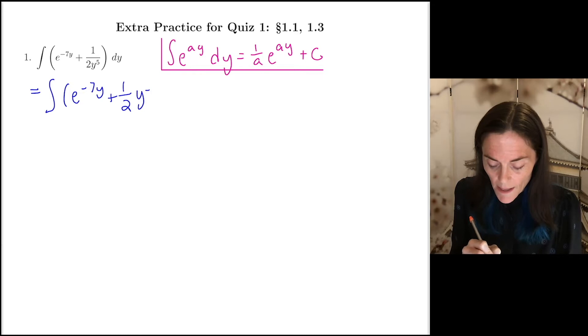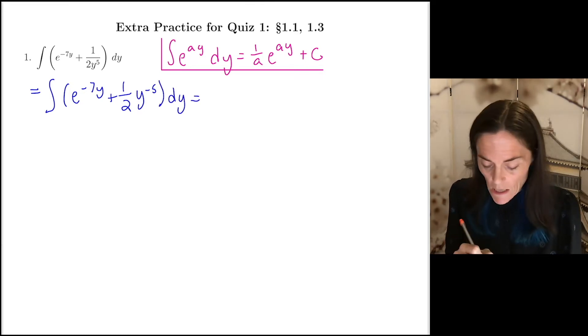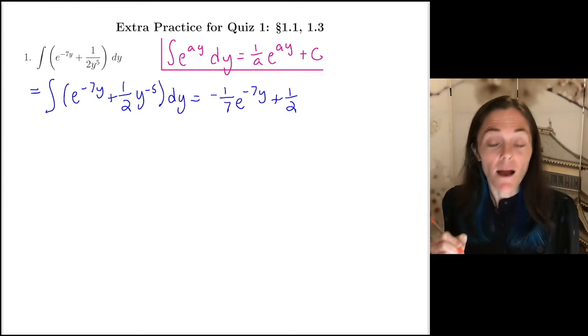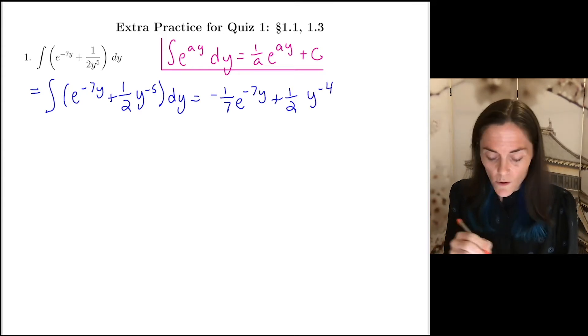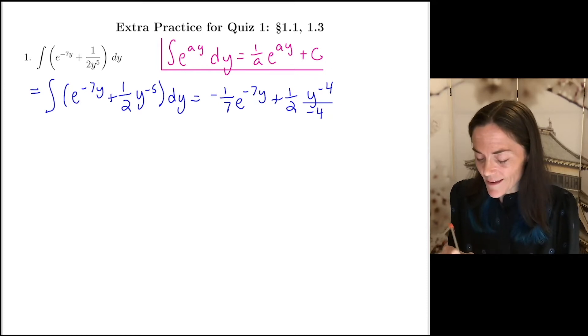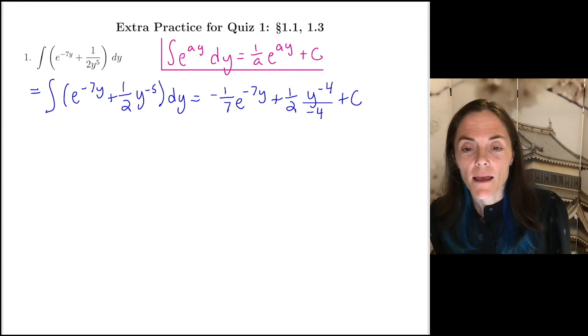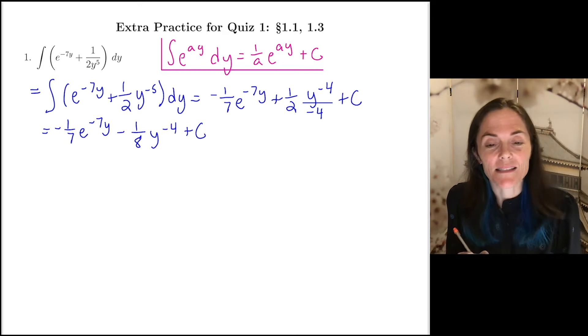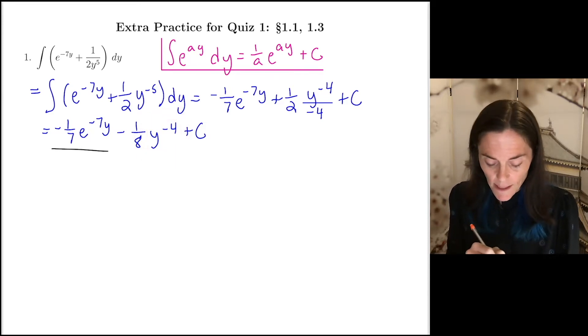It's one half times y to the minus five now is when I am ready this first e to the minus seven y this is just minus one over seven e to the minus seven y and then we have a half times well this one's power rule y to the minus four divided by minus four. And perhaps I will just take one more step here minus one seventh e to the minus seven y then it's going to be minus one over eight and we have y to the minus four plus c. This is number one.